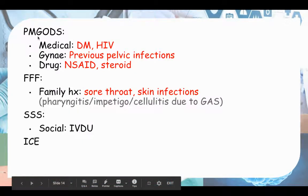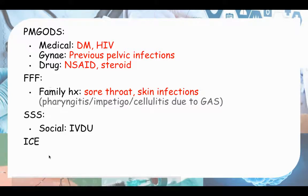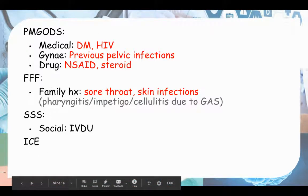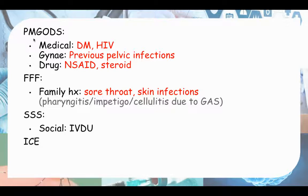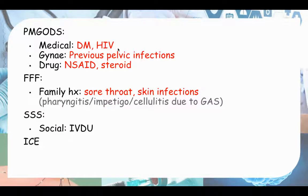We have the mnemonic PM GODS FFF SSS - starting with PM GODS: Past Medical, Gynaecological, Obstetric, Drug, and Surgical history. For past medical history ask about diabetes and HIV as immunosuppressive states. Past gynaecological history - ask about previous pelvic infections as a risk factor. For drug history, ask about immunosuppressive drugs such as NSAIDs and steroids.